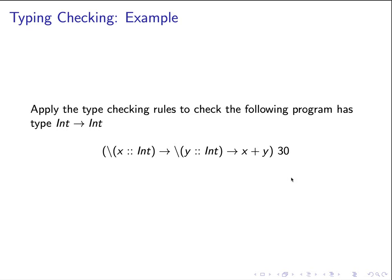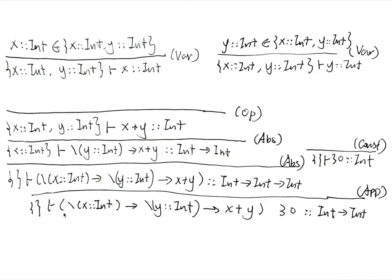Another example: let's see whether we can apply the type checking rule to check the following program has the correct type from int to int. We start off with the source program at the bottom and try to type check it with type int→int under the empty type environment. The shape of this program is a function application, so we apply the app rule, which says we need to prove the first sub-expression has type int→int→int, and the actual argument 30 has type int. We apply the const rule for 30, and for the sub-expression, since it is a lambda abstraction, we apply the abs rule.